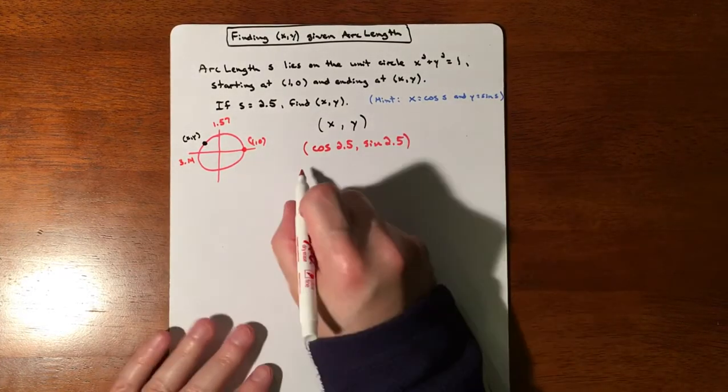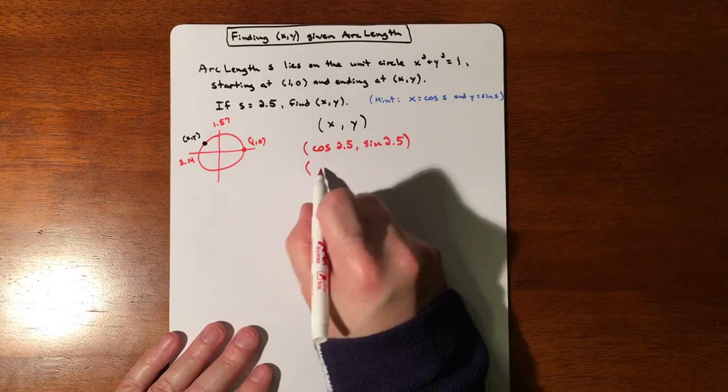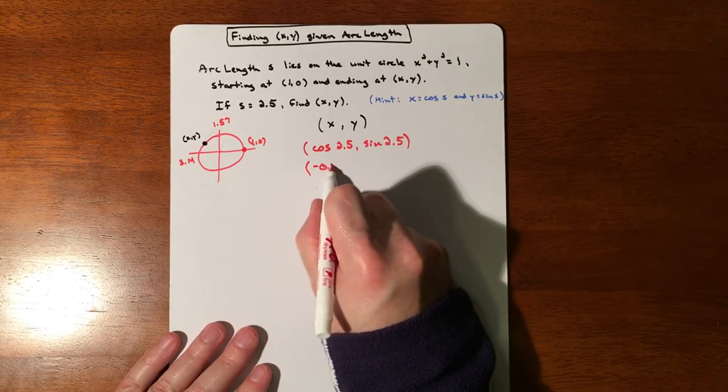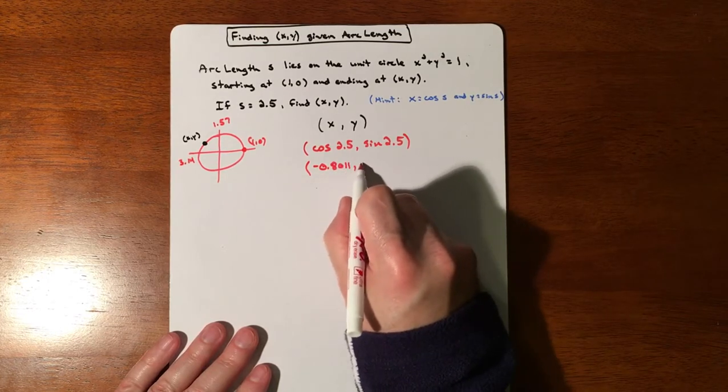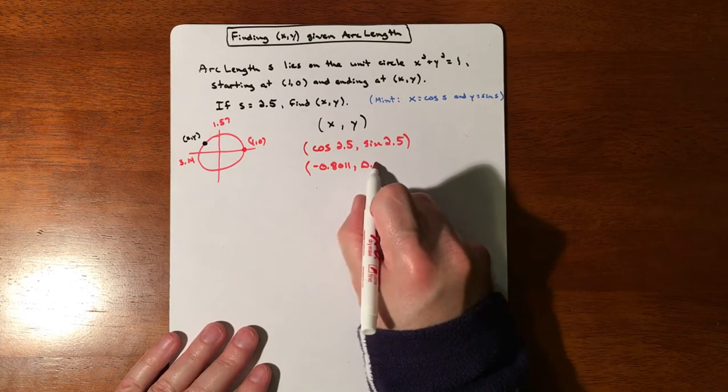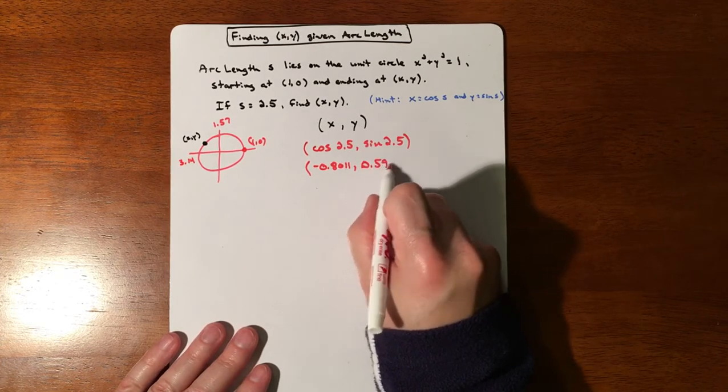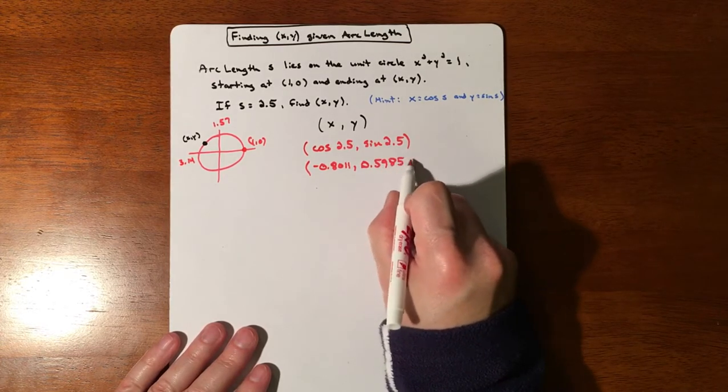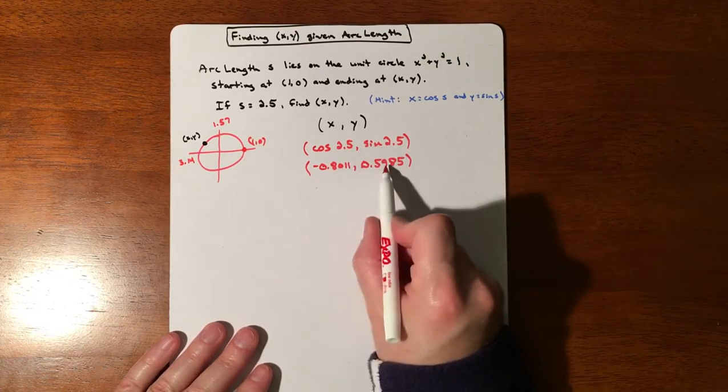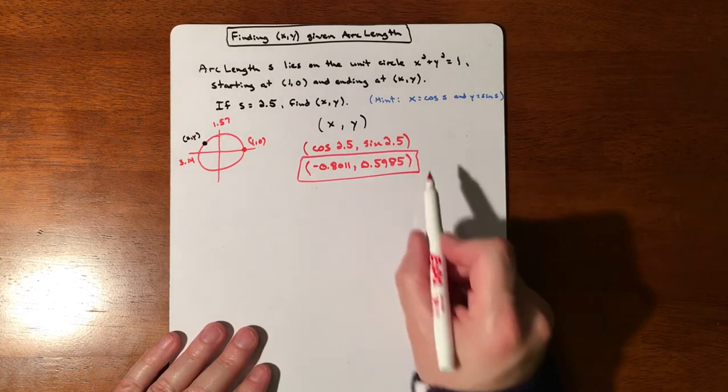So, make sure your calculator is in radians, and it is just going to spit out some values for you. So, negative 0.8011 and positive 0.5985. So that's just me plugging this in the calculator, plugging that in the calculator, getting a value, getting a value. And that ends up being it.